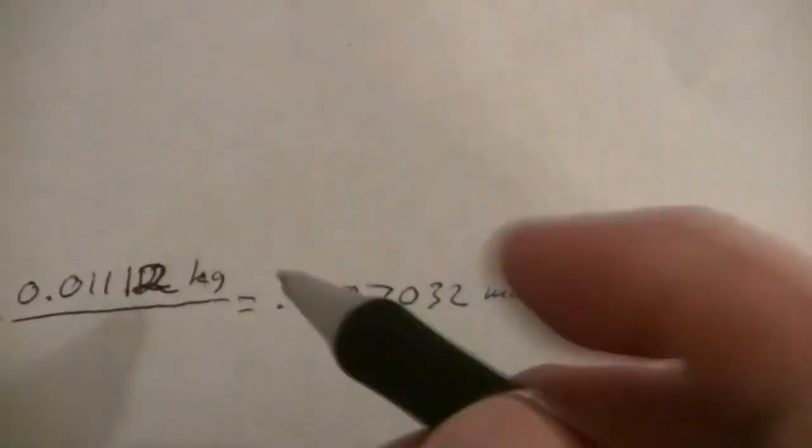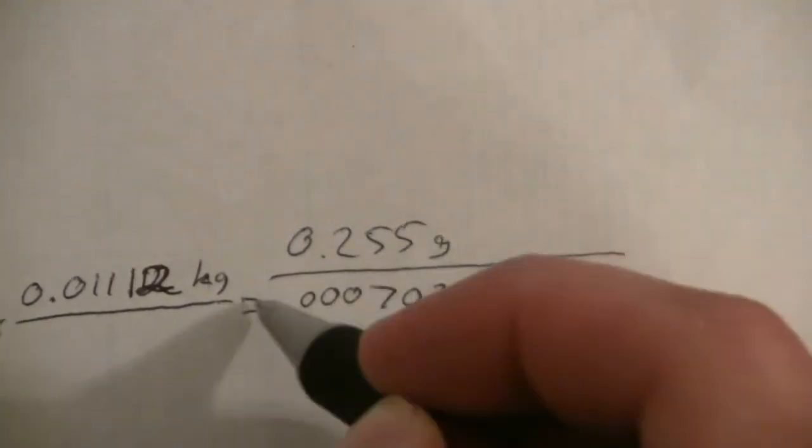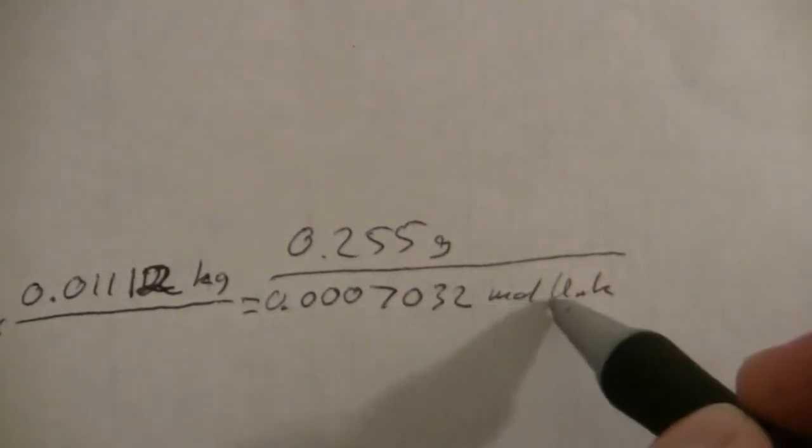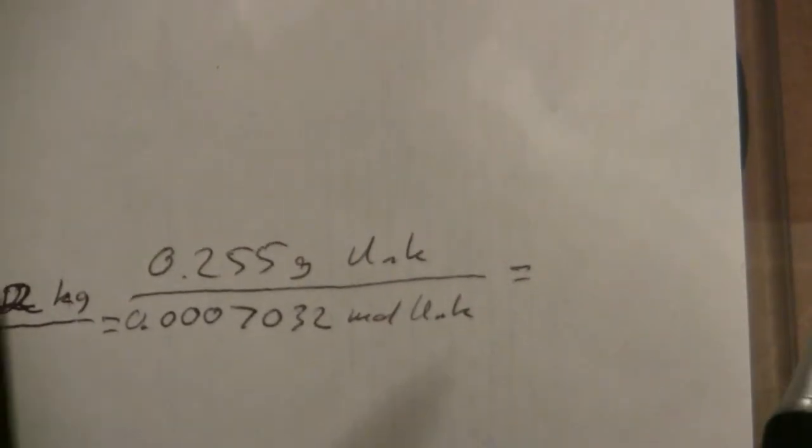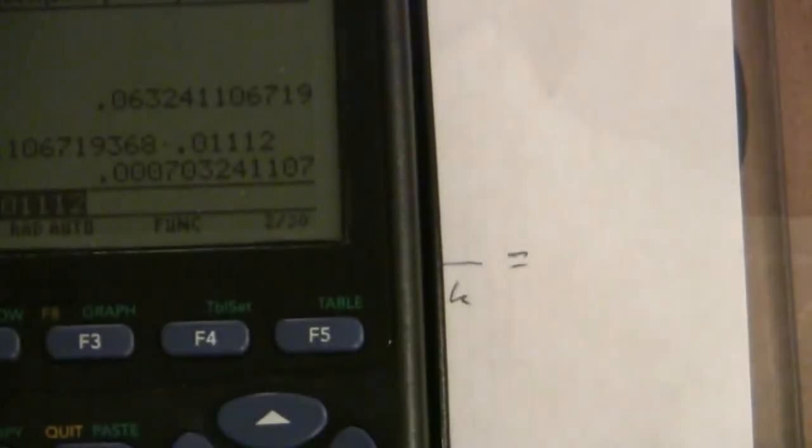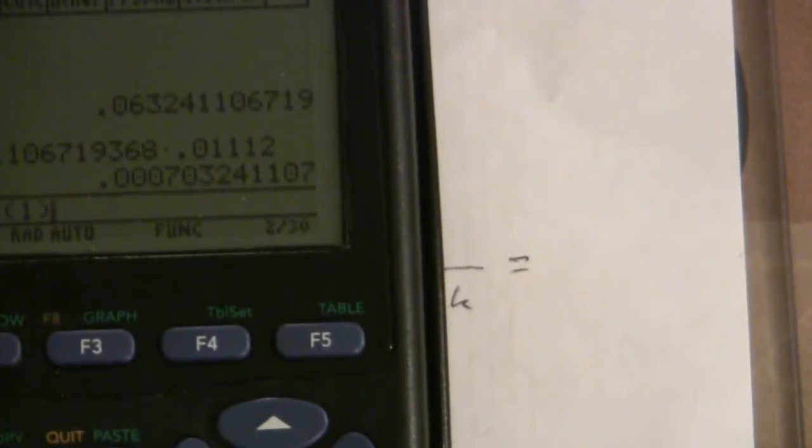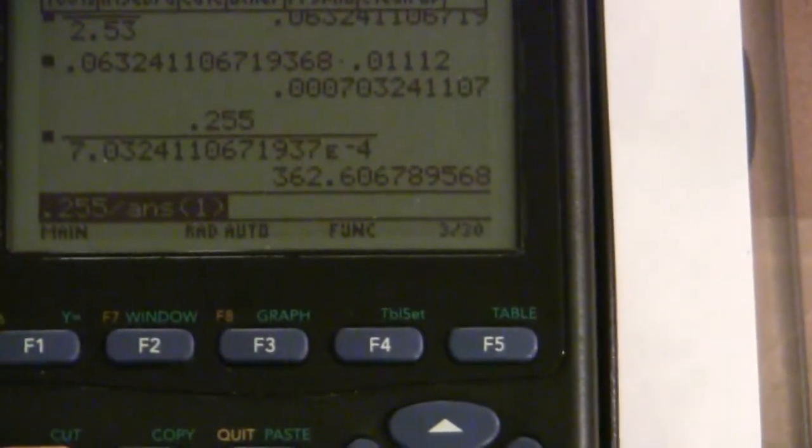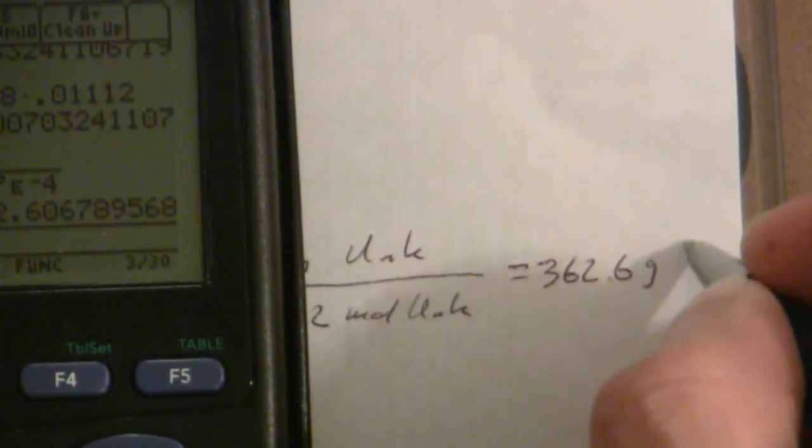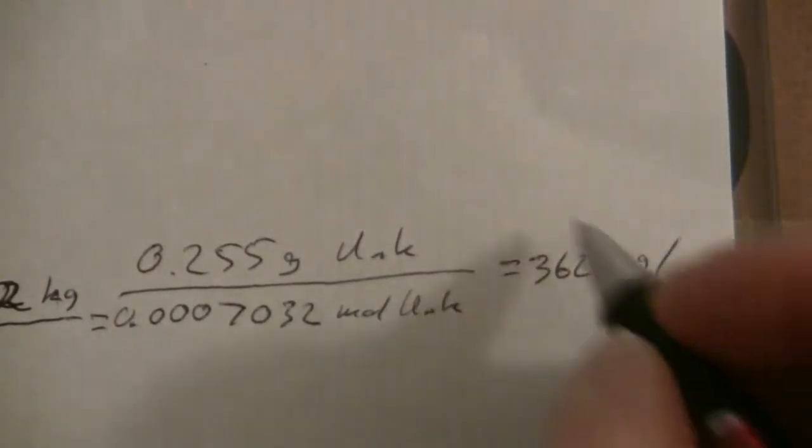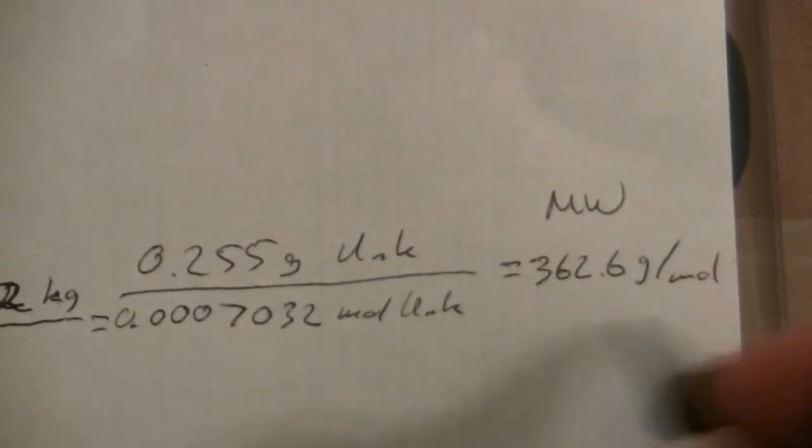Now those moles will be here and then my molar mass I can get by taking that 0.255 grams divided by the moles of the unknown. So what I get here is 0.255 divided by that answer and we get 362.6 grams per mole. So this is the molecular weight of my unknown.